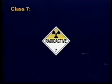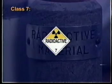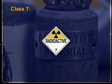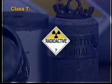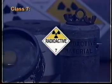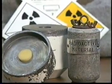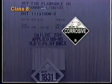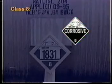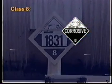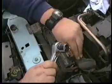Class 7: radioactive material. Radioactive materials emit ionizing radiation that may be harmful to humans or animals and can affect photographic and x-ray film. Class 8: corrosives. Corrosive materials cause damage when they come into contact with living tissue, aluminum, or steel. The acid in a car battery is an example of a Class 8 material.